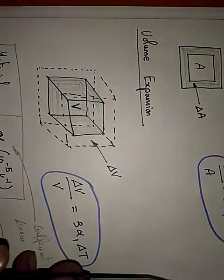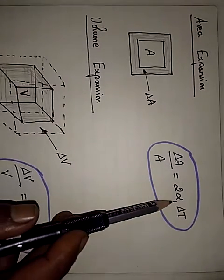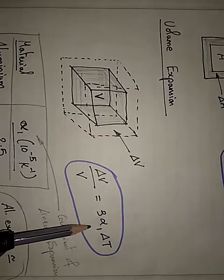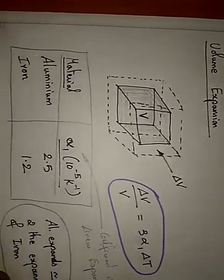In area expansion, we have twice alpha 1 into del T. In volume expansion, it is thrice alpha 1 into del T.